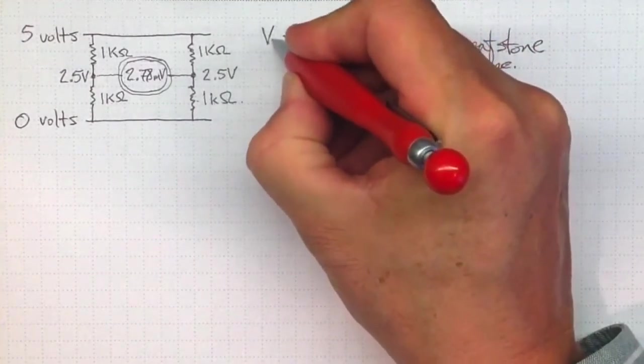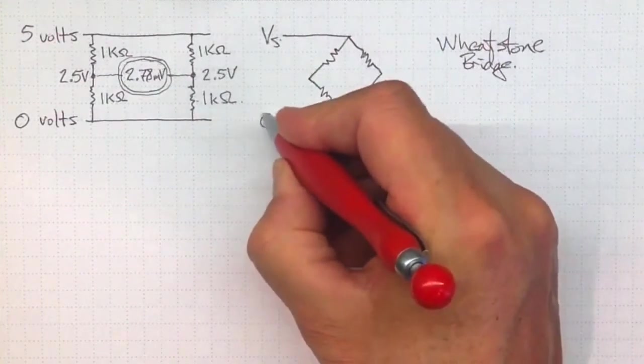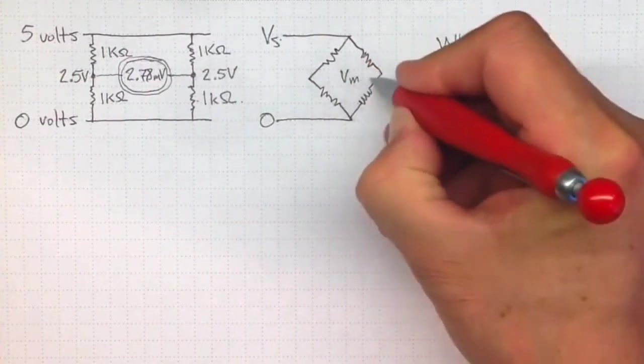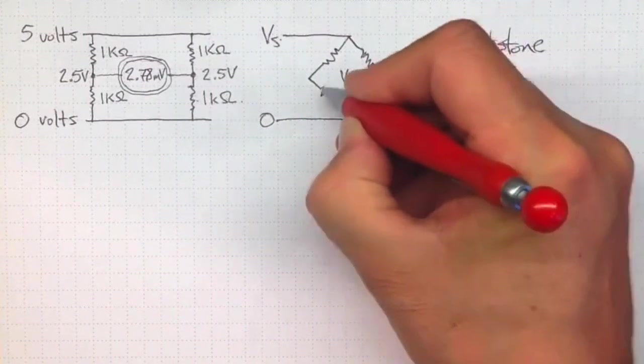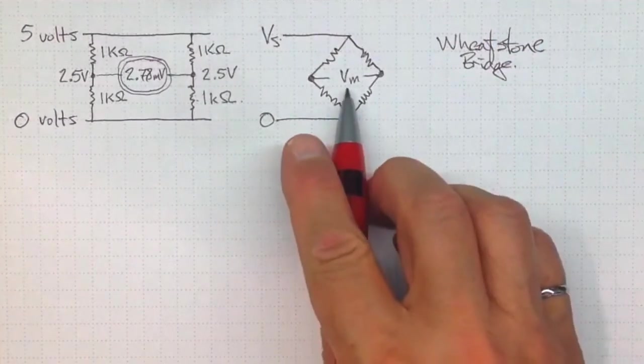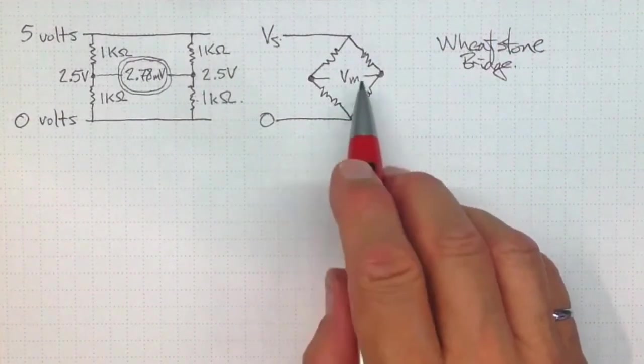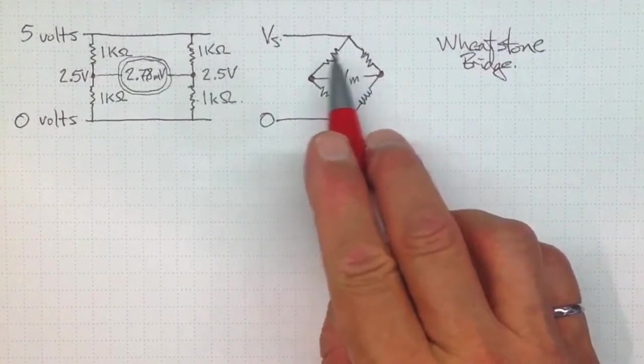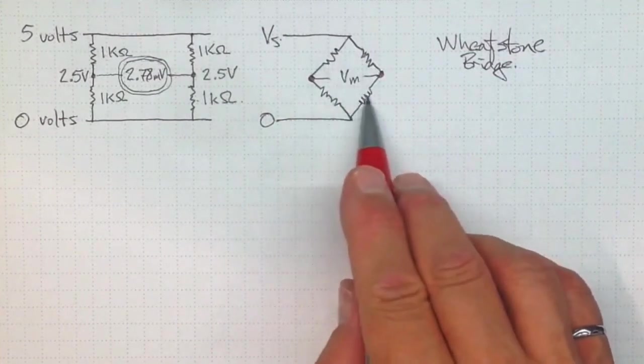And it's a configuration that allows you to detect very small changes in resistance. So we put a supply voltage up here, connect that to zero, and then we measure the voltage across here. That measured voltage will be very small, and it will be related to the degree to which these resistors don't balance each other out.